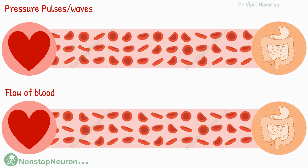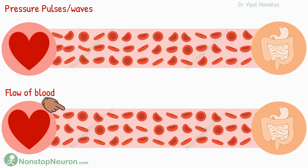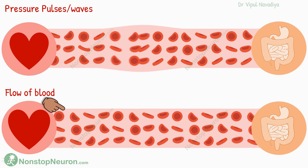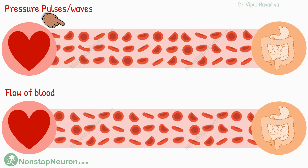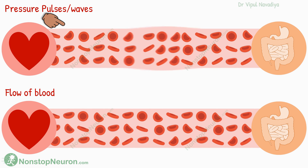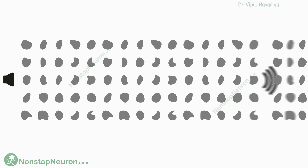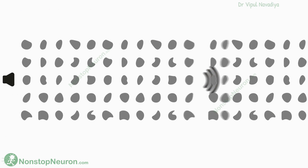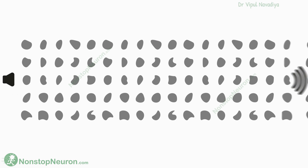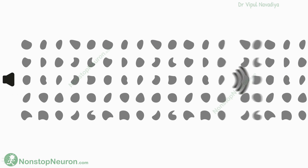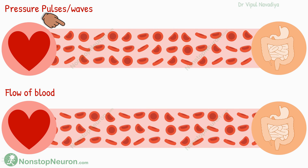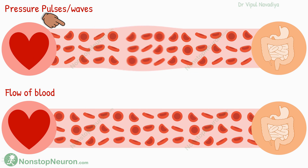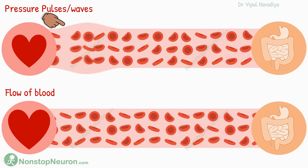Before we start any discussion, get one thing very clear: pressure pulses are not the same as the flow of blood. Blood flow is the actual flow of blood, but pressure pulses are the waves of pressure that travel through the blood. It's like sound waves — as sound moves, the air molecules maintain their overall position, but the wave of sound moves ahead through them. The pressure waves in the arterial tree are something similar: the blood remains static, but the wave of pressure passes through it.